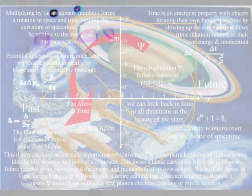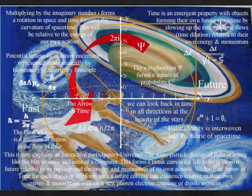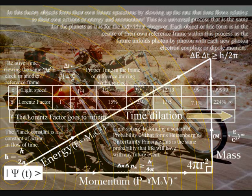Therefore, even a dancer on the dance floor will interact with this process, forming their own future space-time relative to their energy and momentum of their own actions. In this theory, creation is truly in the hand and eye of the beholder.